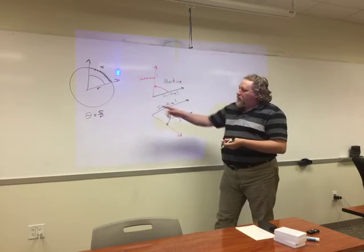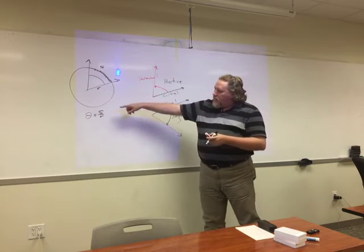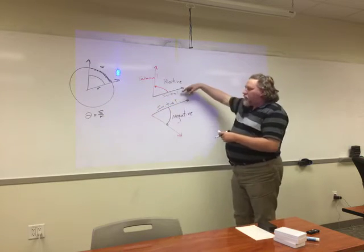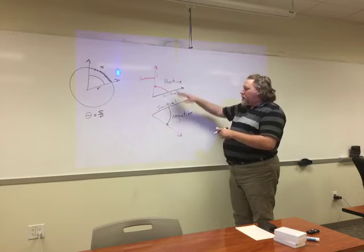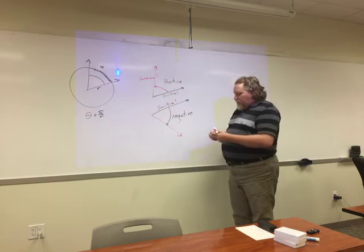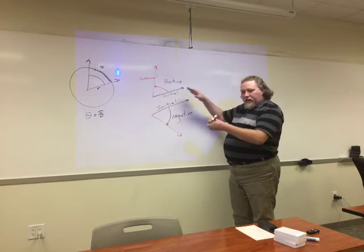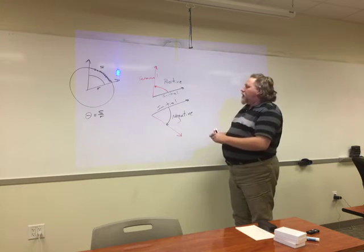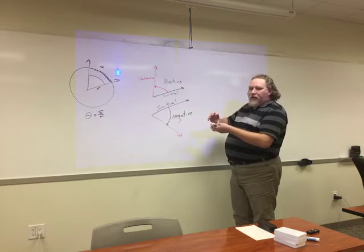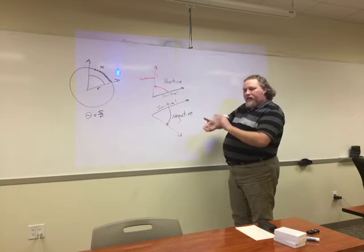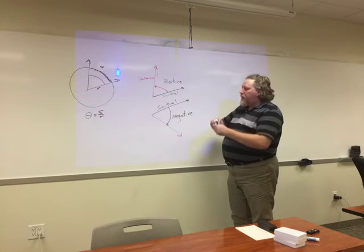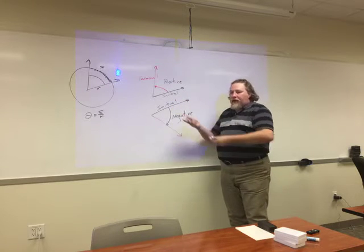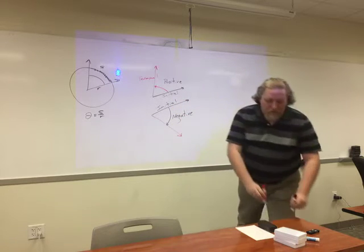Now not only can we use arc length over radius to find the angle, but we can also look at what direction the angle is going — positive or negative. A good way to remember this: think about unscrewing a bottle cap versus tightening it. It matters what direction you turn, and so here in trigonometry we care what direction the angle turns.